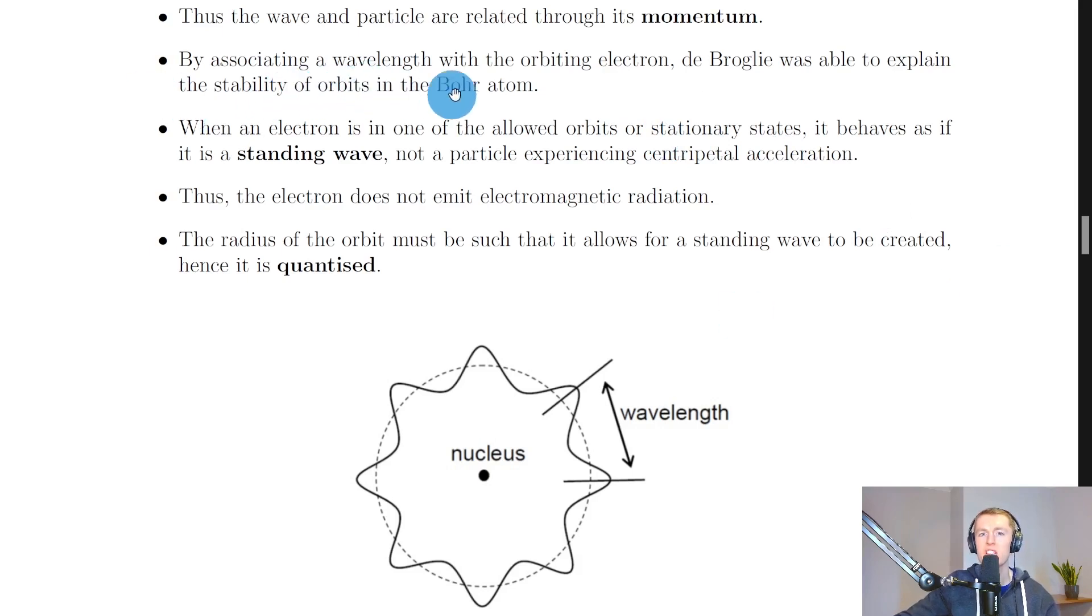So it says by associating a wavelength with the orbiting electron, de Broglie was able to explain the stability of orbits in the Bohr atom. When an electron is in one of the allowed orbits or stationary states, it behaves as if it is a standing wave, not a particle experiencing centripetal acceleration.